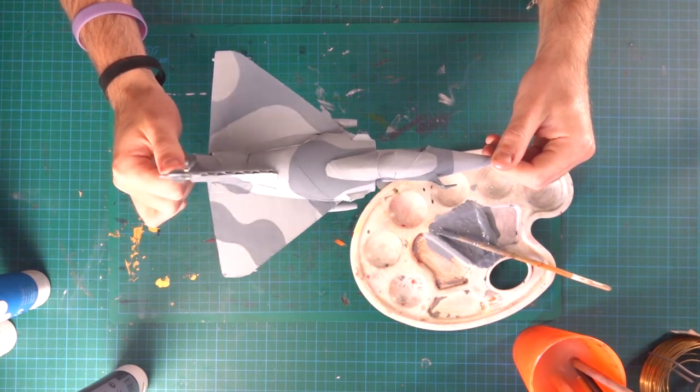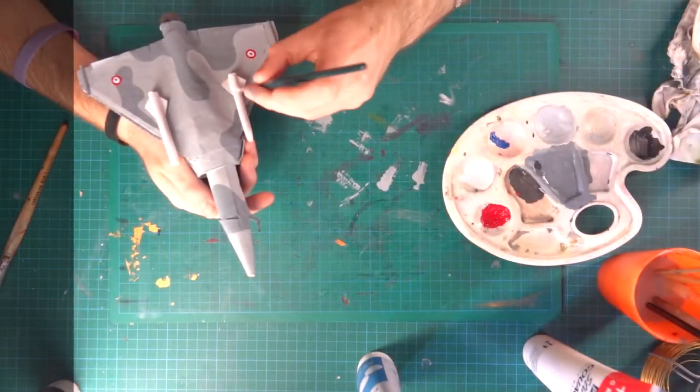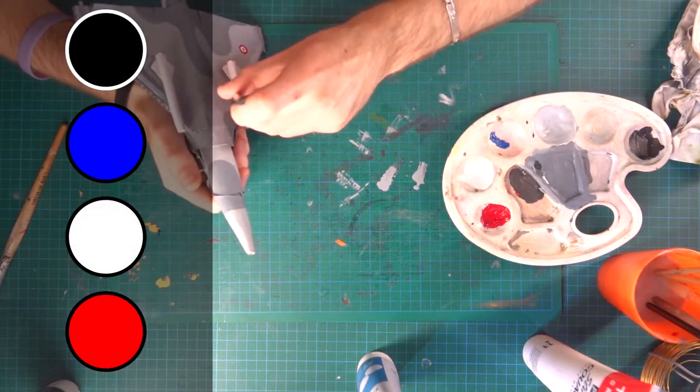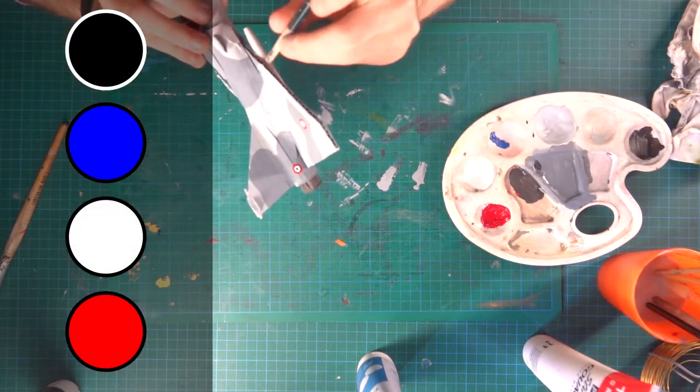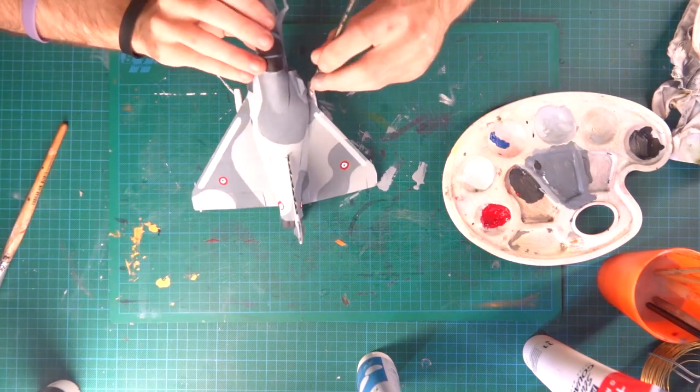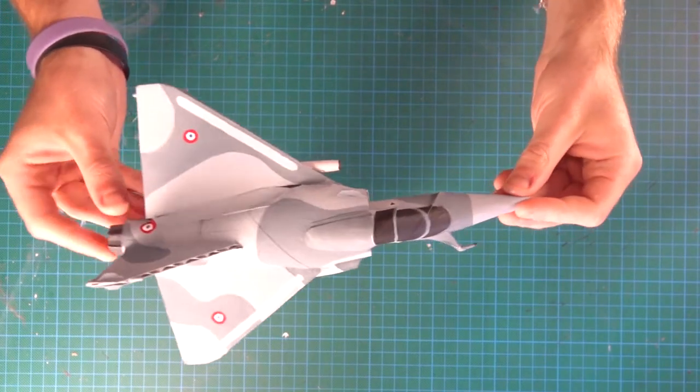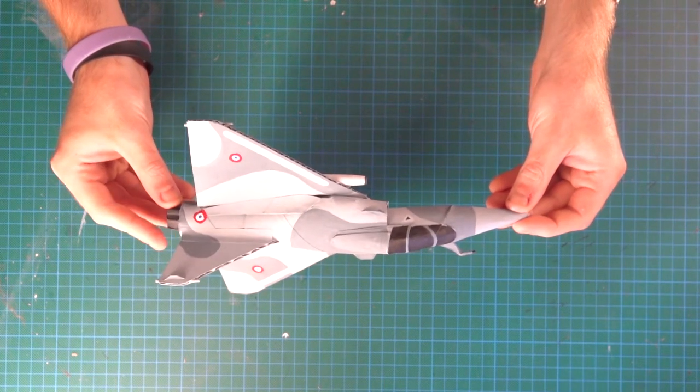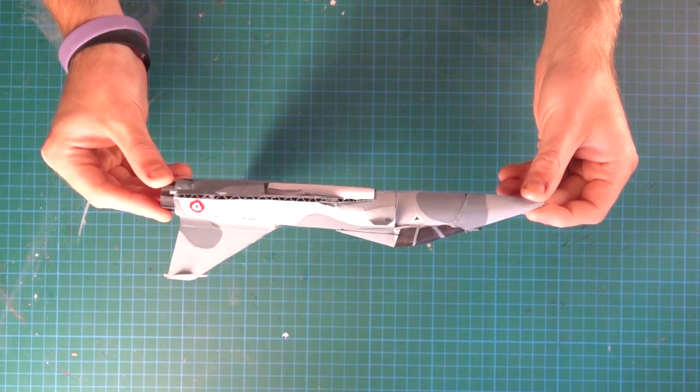For rest of details, I use black for the cockpit, blue, white and red for the French flag on wings and full white for missiles. And there it is, the Mirage 2000.